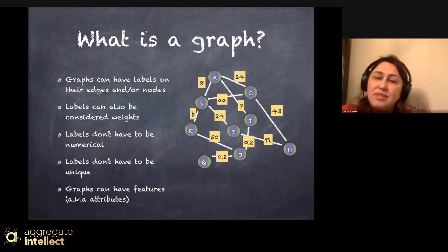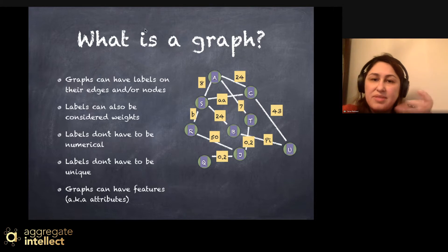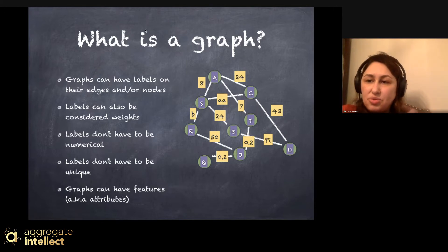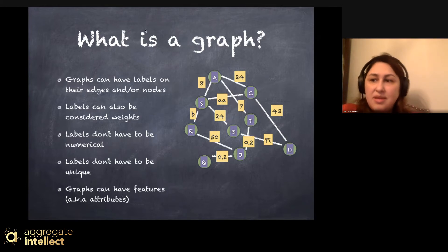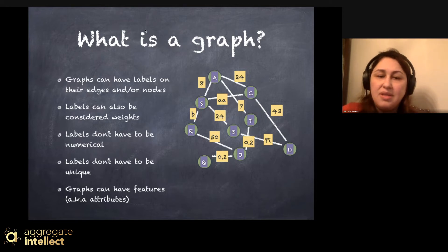Graphs can also have features or attributes. Just remember to be careful not to mix up features with labels. An easy way to remember the difference: imagine each node is a person. The label of that node is the name of the person, and features are the person's characteristics. That's how you distinguish between labels and features.